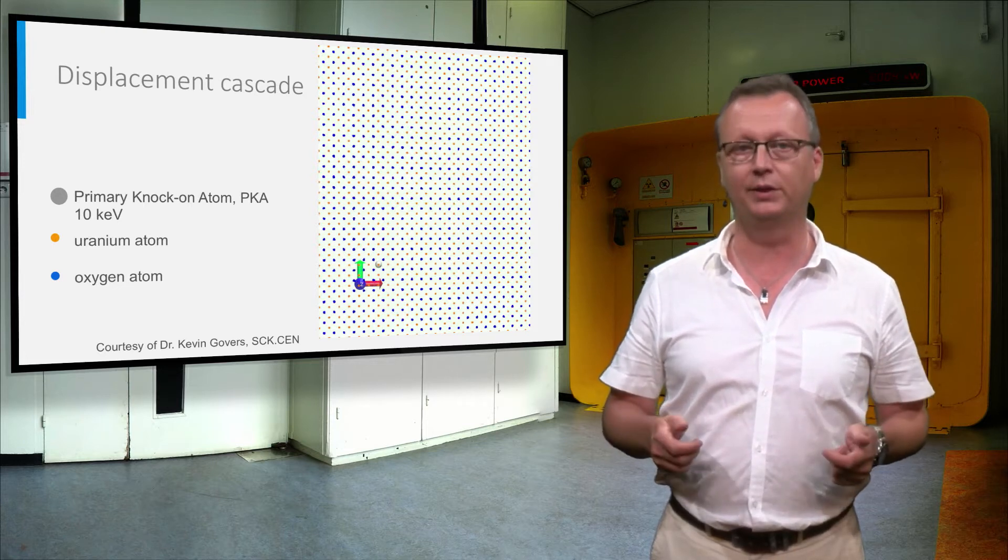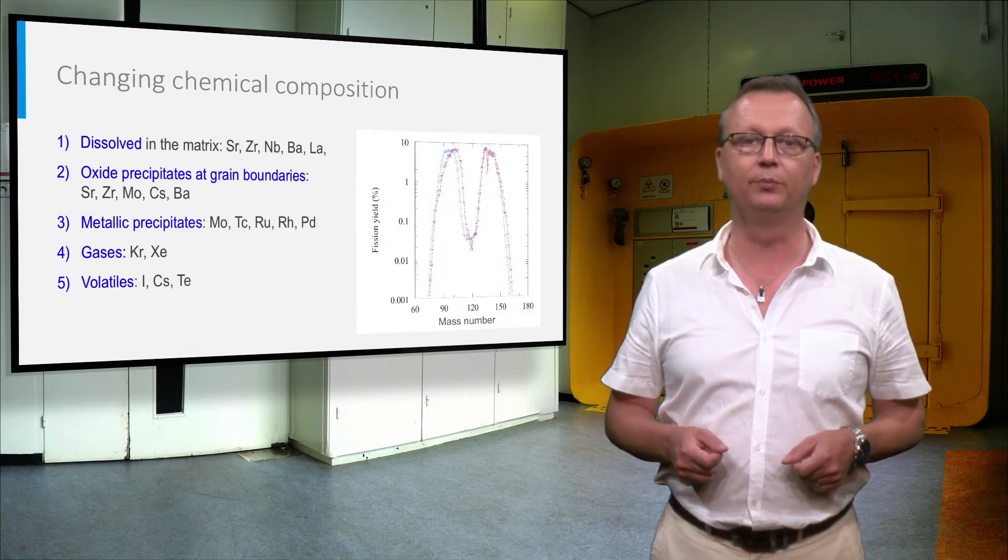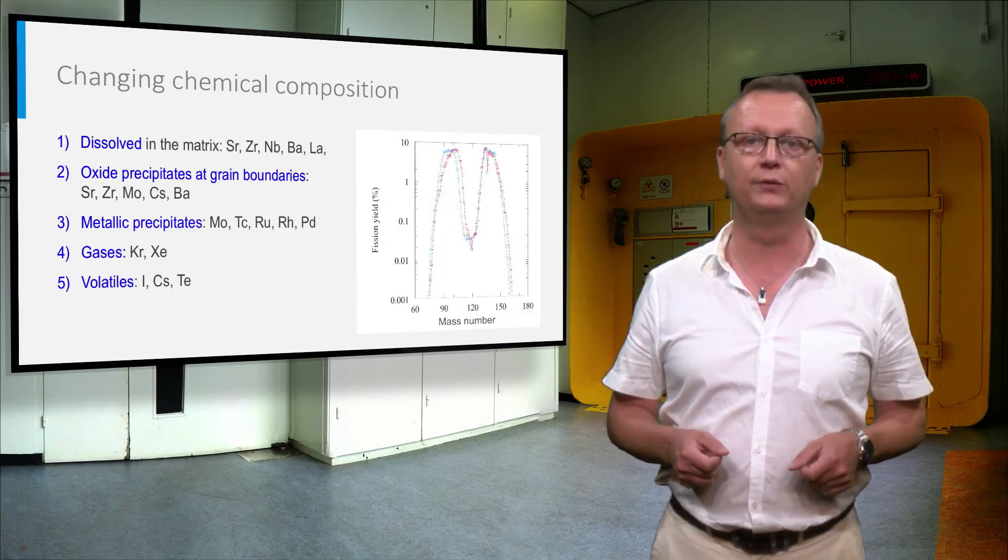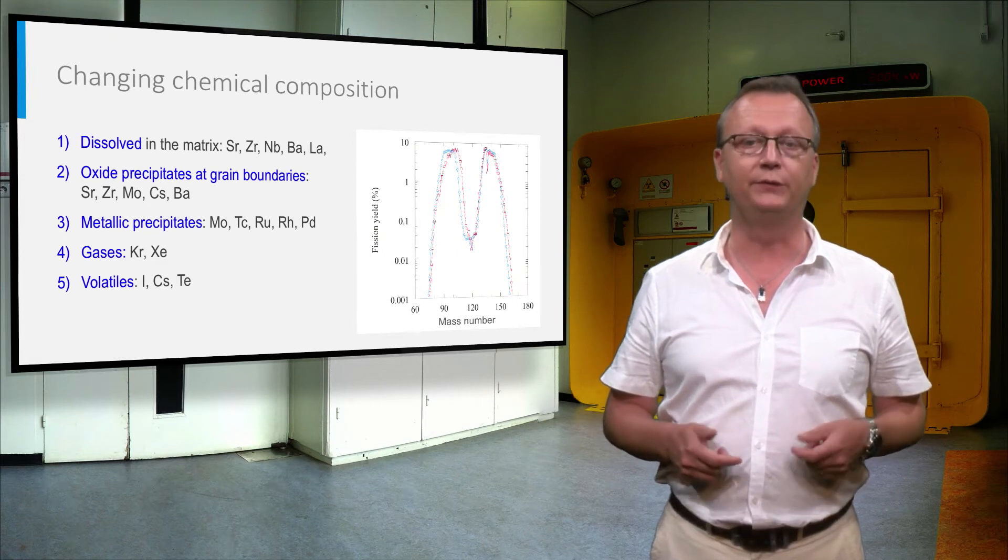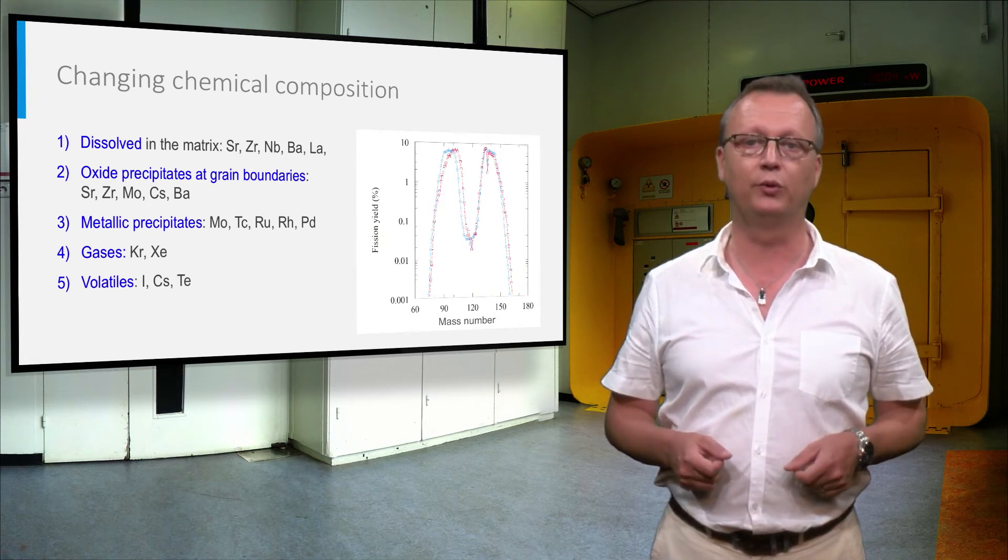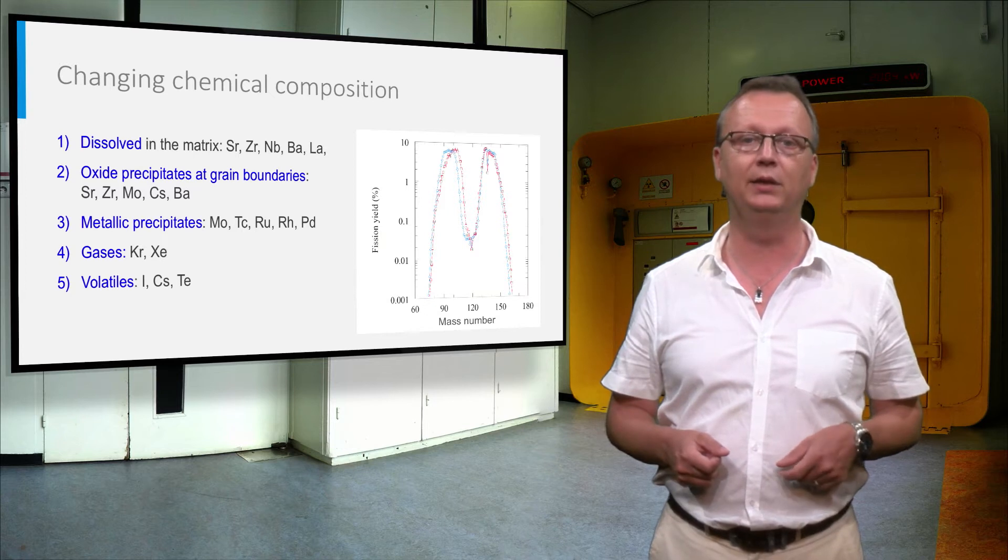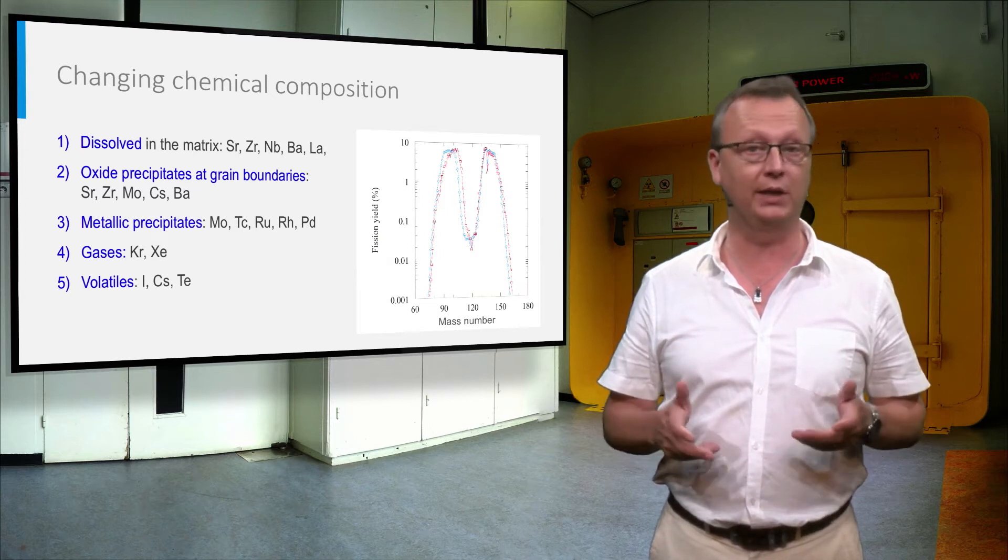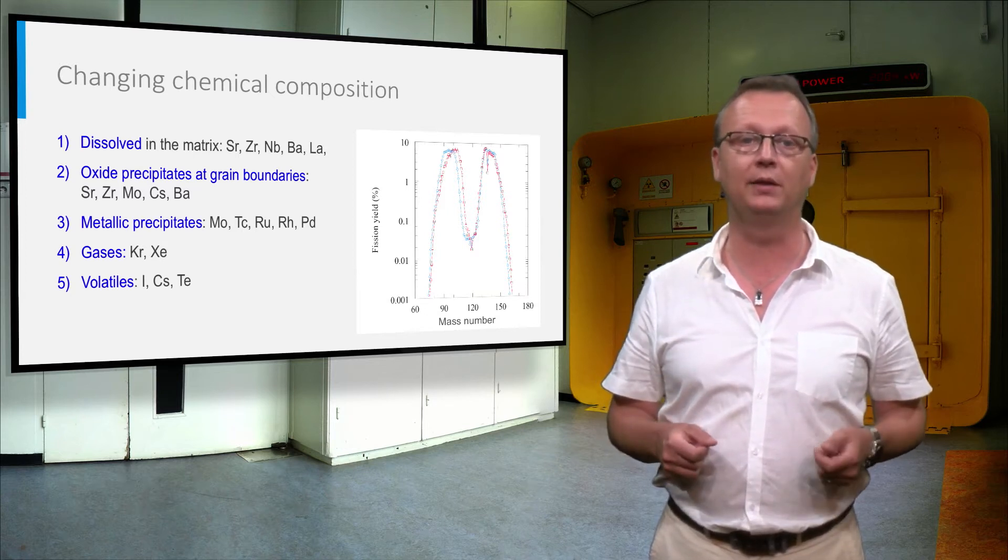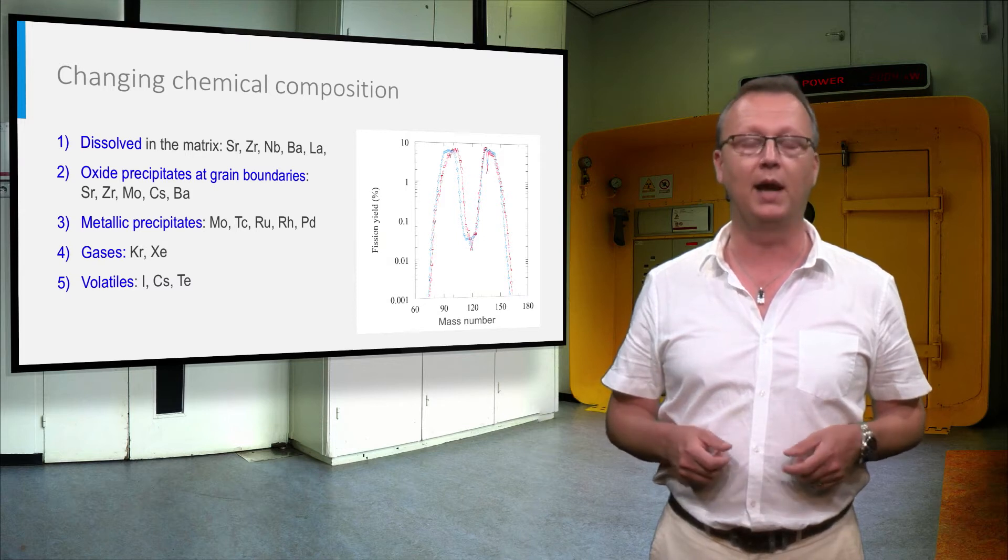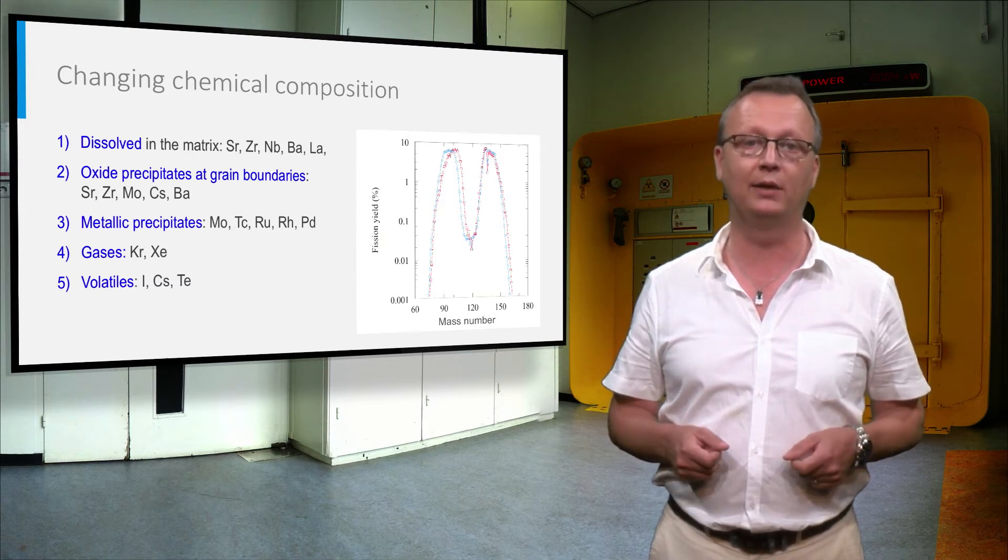As already discussed in a previous presentation, a wide range of fission products is formed at a doubled number of original uranium atoms fissioned. These fission products are foreign and most of them do not fit in the crystal lattice of UO2 and form secondary phases such as oxide and metallic precipitates and gases that collect in pores and voids.